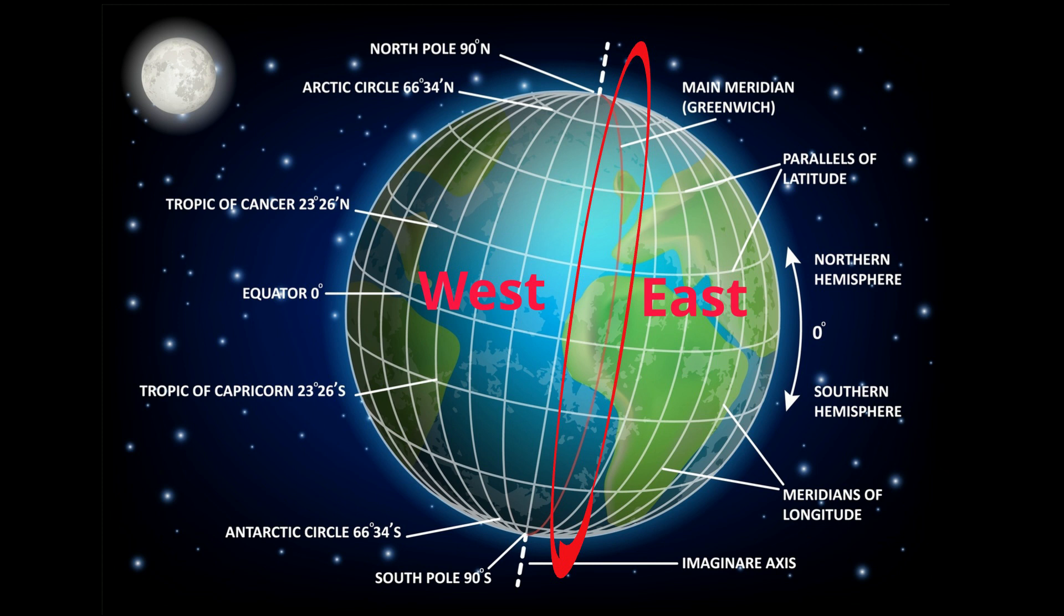The prime meridian is at zero degrees longitude. Any place to the left of the prime meridian is in the western hemisphere, while any place to the right of the prime meridian is in the eastern hemisphere.